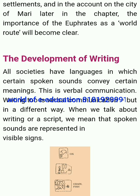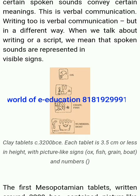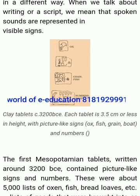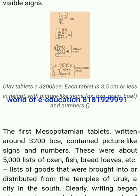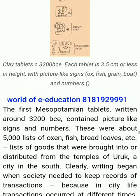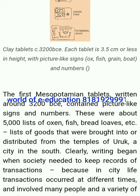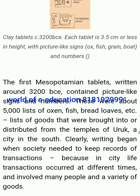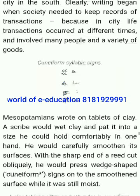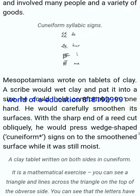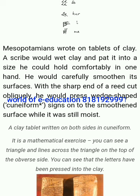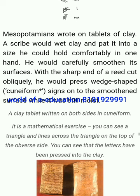Development of writing: societies have languages in which certain spoken sounds convey certain meanings — this is verbal communication. Writing too is verbal communication, but in a different way. When we talk about writing or a script, we mean that spoken sounds are represented in visible signs. The first Mesopotamian tablets, written around 3,200 BCE, contained picture-like signs and numbers. These were about 5,000 lists of oxen, fish, bread loaves, etc. — lists of goods that were brought into or distributed from the temples of Uruk, a city in the south. Writing began when society needed to keep records of transactions, because in city life transactions occurred at different times and involved many people and a variety of goods.